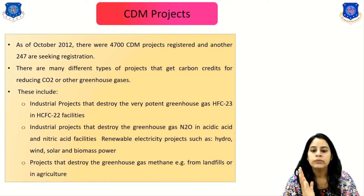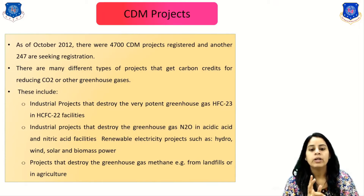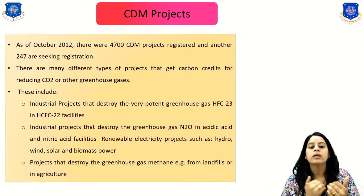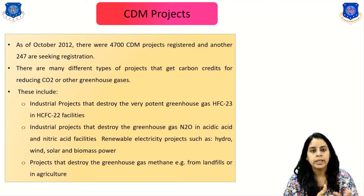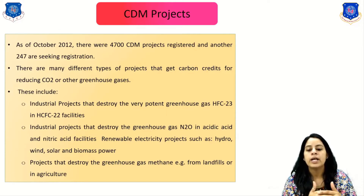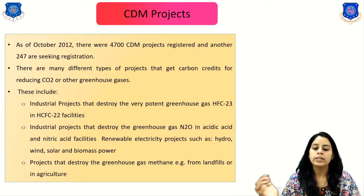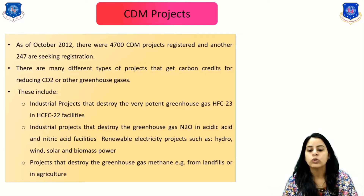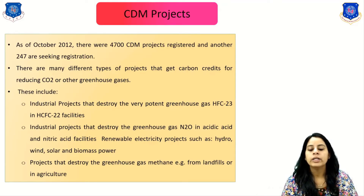As of October 2012, there were 4,700 CDM projects registered and another 247 seeking registration. There are many different types of projects that earn carbon credits for reducing CO2 or other greenhouse gases. These include industrial projects that destroy the potent greenhouse gas HFC-23 in HF and HCFC-22 facilities, industrial projects that destroy greenhouse gas N2O in acetic acid and nitric acid facilities, and renewable electricity projects such as hydrogen, solar, and biomass power. Also included are projects that destroy greenhouse gas methane from landfills or agriculture.